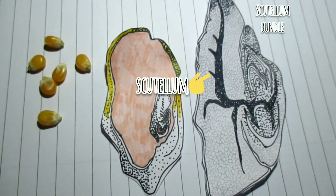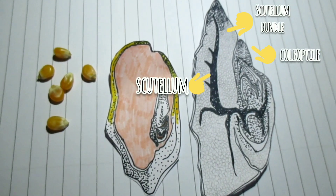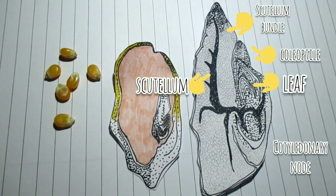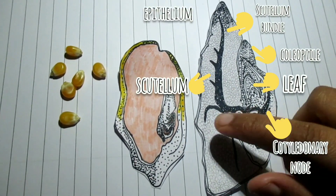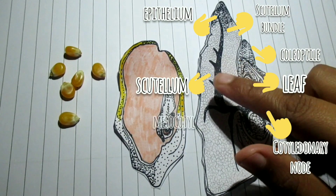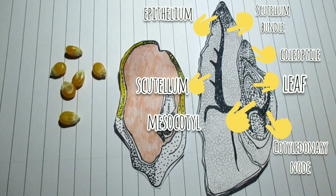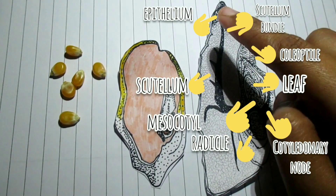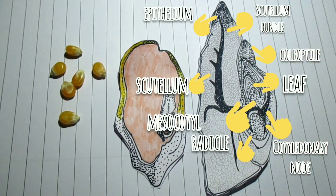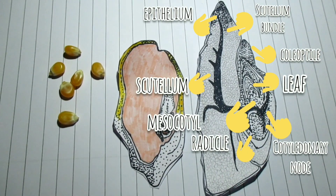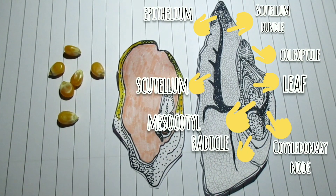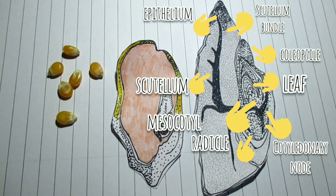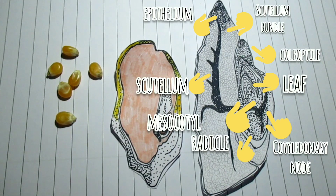On the upper side of the embryo is a shield-shaped structure called the scutellum, which completely covers the endosperm. The tissue of the scutellum abutting on the endosperm forms the epithelium, which is a glandular tissue secreting enzymes to digest the food in the endosperm. The scutellum is actually the single cotyledon of monocots, whose leaf nature is not at all clear. Its only apparent function is the absorption of food materials from the endosperm.